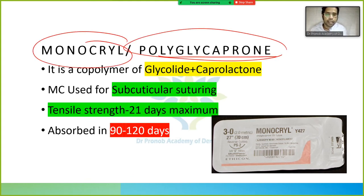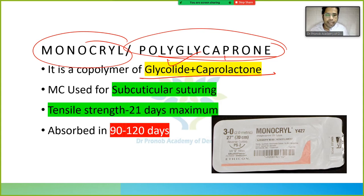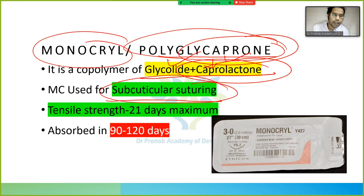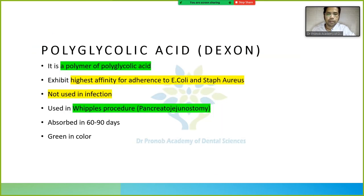Monocryl is also known as polyglycaprone. It is a co-polymer of glycolide and caprolactone. Its most common use is for subcuticular suturing. Maximum tensile strength lasts 21 days, and it is absorbed in 90 to 120 days.